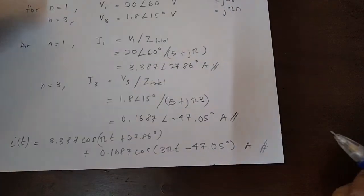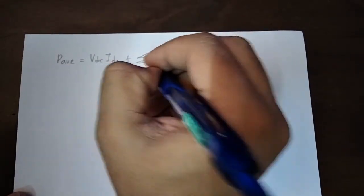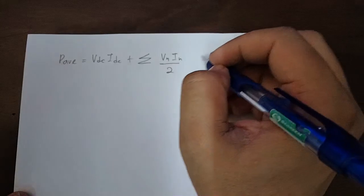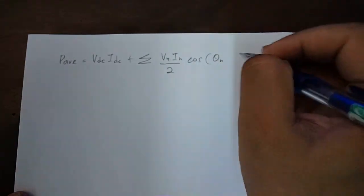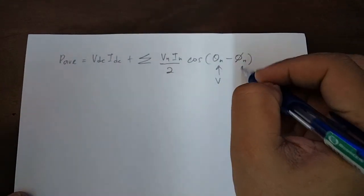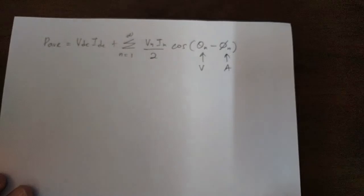That is the total current for the circuit. Next, let's look at the average power. The equation for average power is: P_avg = V_DC · I_DC + summation of (V_N · I_N / 2) · cos(θ_VN − θ_IN) from n equals 1 to infinity, where θ_V and θ_I are the phase angles for the voltage and current respectively.